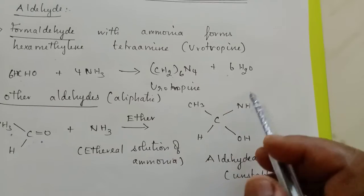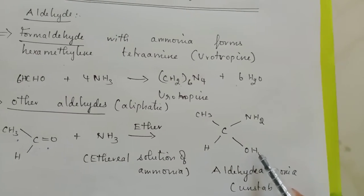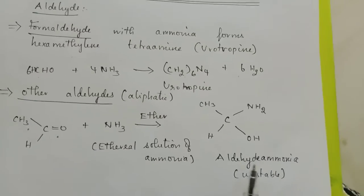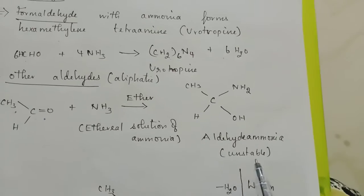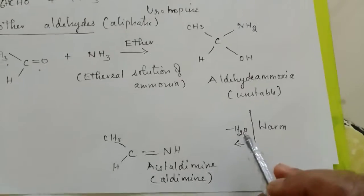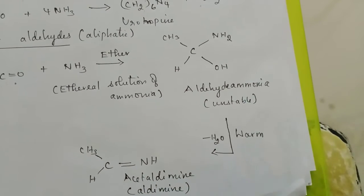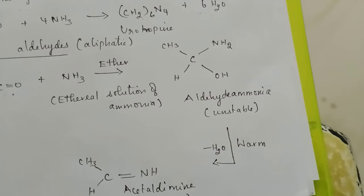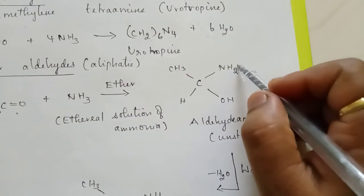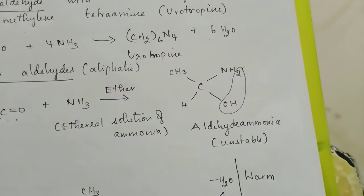So aldehyde group and also the ammonia, one of the hydrogen binds with OH, oxygen. So aldehyde ammonia you will get, but this is an unstable substance. By warming it, it will lose water molecule, so that it leads to acetaldimine, that means aldimine. Over here the water evolves, the hydrogen from this and the OH evolves as a water molecule.